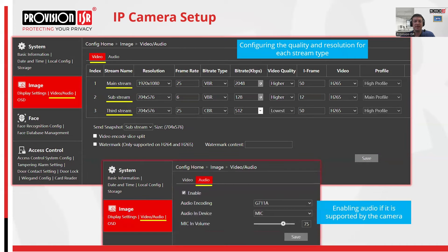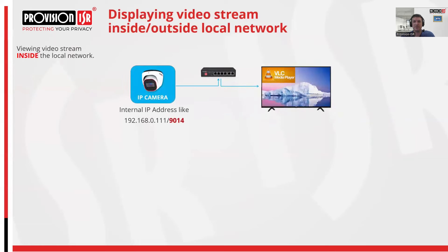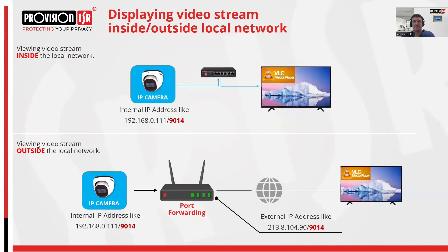To enable audio from the camera, whether it has a built-in microphone or allows for an external microphone connection, you need to navigate to the audio settings panel and enable audio transmission. This ensures that audio will also be recorded along with the video on the NVR. Once we have determined the port for the RTSP protocol, we can proceed to create a link. If we need to access a camera located outside of the network and our router has a fixed static address, we must configure port forwarding on the router to facilitate this connection.